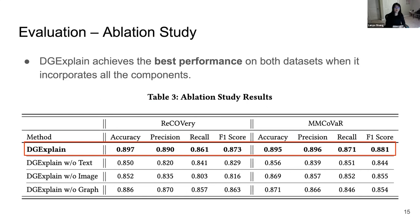Finally, we performed an ablation study to understand how effective each component of DGX Plan is in improving misinformation detection performance. We compared DGX Plan with three ablated variants: one without generating textual features, one without generating visual features, and one without information propagated through the dual content-comment graph. Results show the full framework achieves the best performance when all components are incorporated.